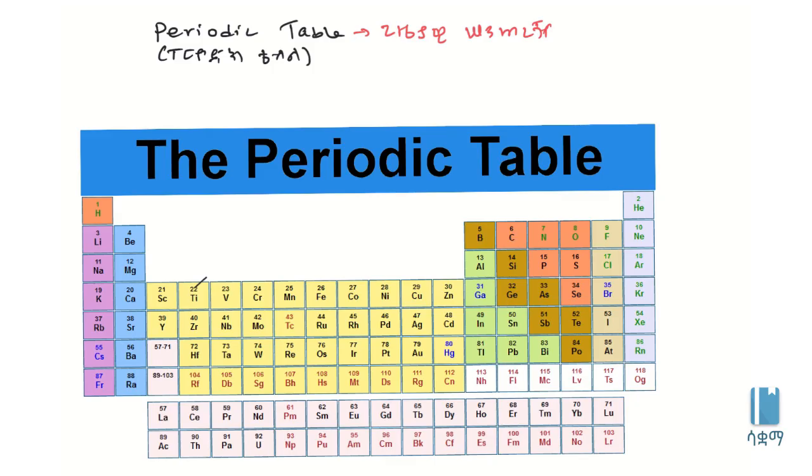Elements are classified based on their properties. We have metals which include elements like beryllium and others arranged by their characteristics.